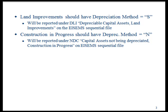The O100 asset class LAN improvement tags should be marked for depreciation. They will be reported under DLI Depreciable Capital Assets Land Improvement. CIP tags should not be depreciated; they will be reported under NDC Capital Assets Not Being Depreciated Construction in Progress.